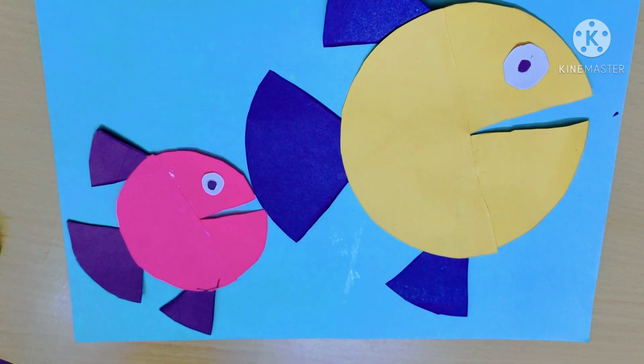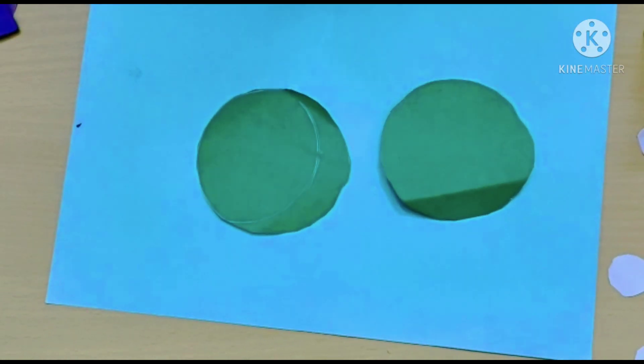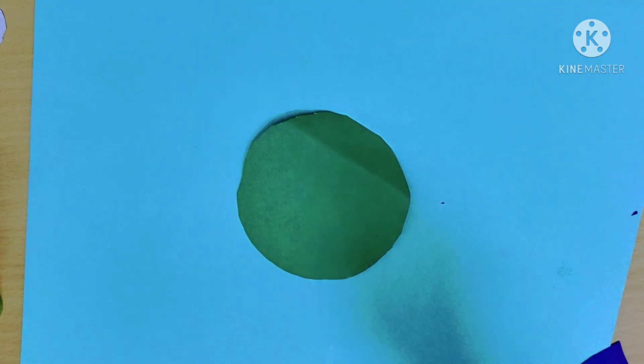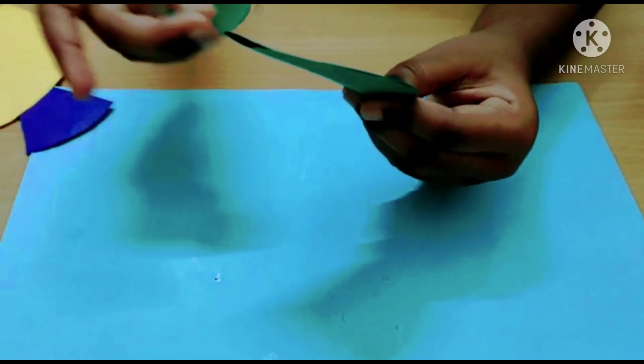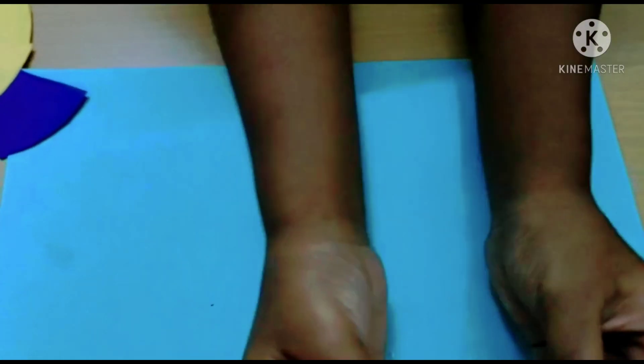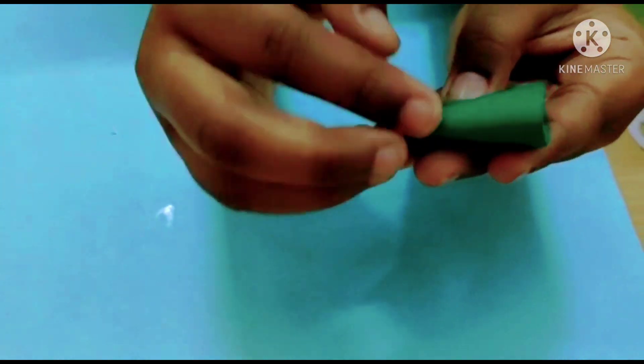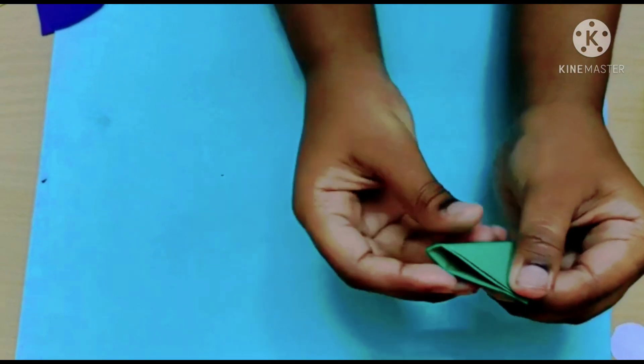Make the seaweed. Keep these two aside now. Now I am going to make the seaweed with this. I can fold this into half, fold this into half again and again.